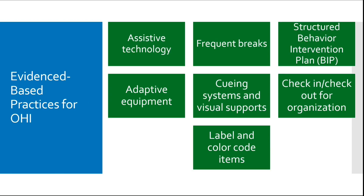Some evidence-based practices for other health-impaired students include assistive technology, providing frequent breaks, and check-in and check-out for organization to make sure they are on task and have what they need to be successful. Label and color-code different items — for example, a red folder for math, a blue folder for another subject. Different color papers will help. Like other disability categories, OHI is very broad, and evidence-based practices will be based on the specific needs of individual children.